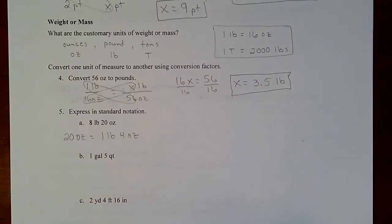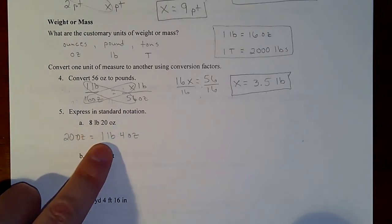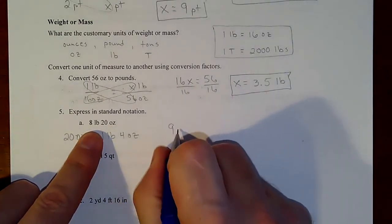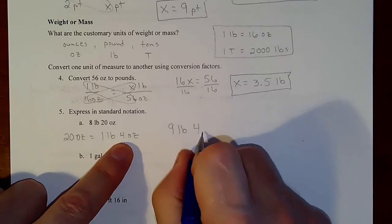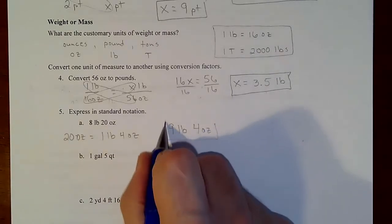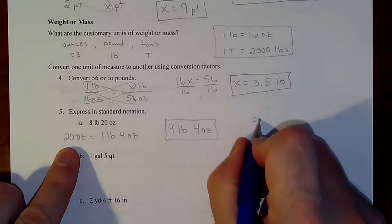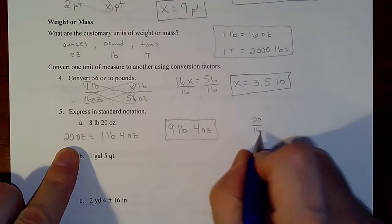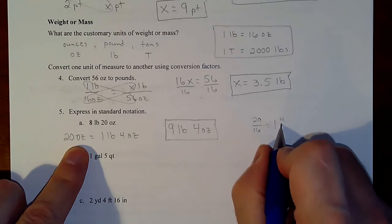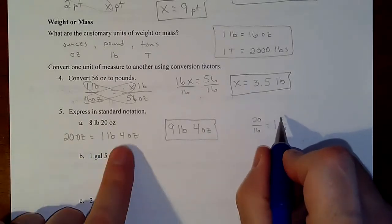So if we had eight pounds, 20 ounces, but we're taking a pound's worth of ounces out, that makes nine pounds, four ounces. The math here is: you take 20 and divide it by 16 — it goes in one time with four left over. That four represents your four ounces.